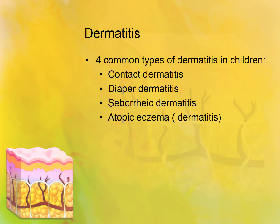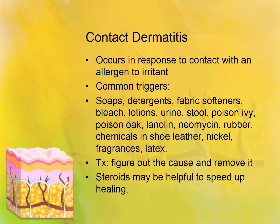Dermatitis. More than half of the dermatological issues in children are just various forms of dermatitis. The good news is that it is reversible. It's usually caused from inflammation and can be acute or chronic. Chronic dermatitis will yield some permanent effects such as scarring or pitting of the skin. The four most common types of dermatitis in children are listed on your slide. Contact dermatitis is usually an allergic reaction to something that has made contact with the skin. The best treatment is to figure out the cause and get rid of it. Steroids may be helpful to speed up healing and slow down the inflammatory process.